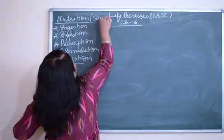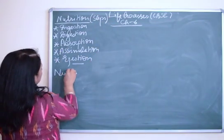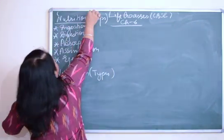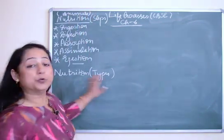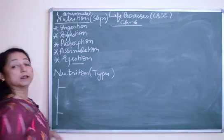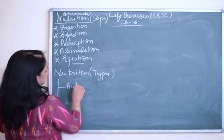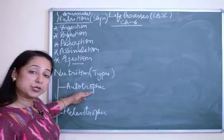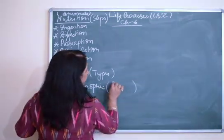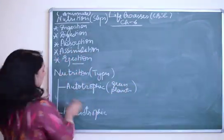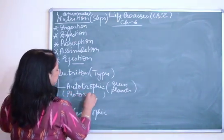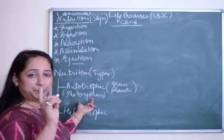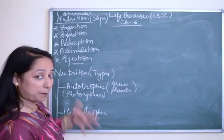Now we are going to talk about types of nutrition. There are two types: autotrophic and heterotrophic nutrition. Autotrophic nutrition is the one which takes place in green plants, and the process by which it takes place is known as photosynthesis. In our upcoming video we'll take up photosynthesis in detail — its steps and the various experiments in our course to prove the different parts of photosynthesis.